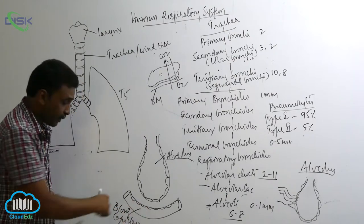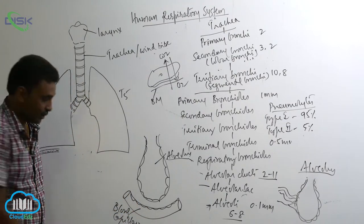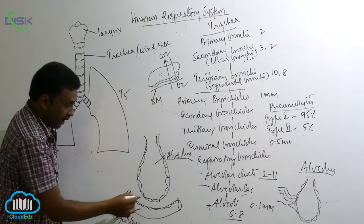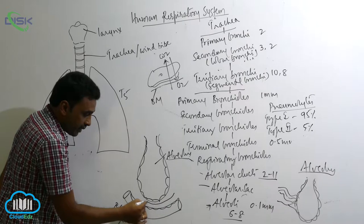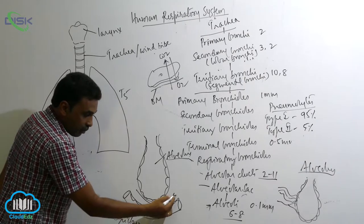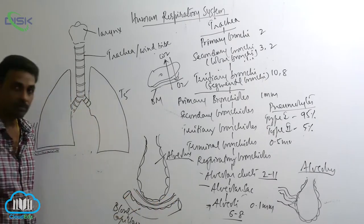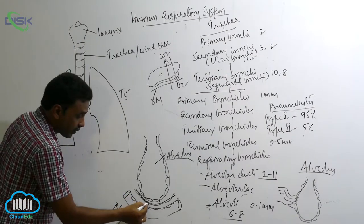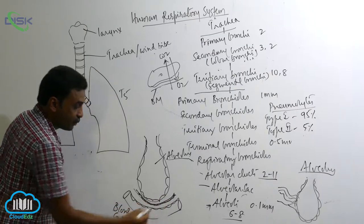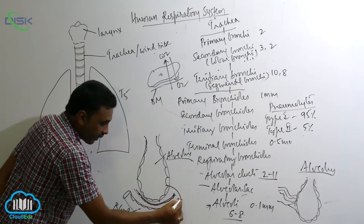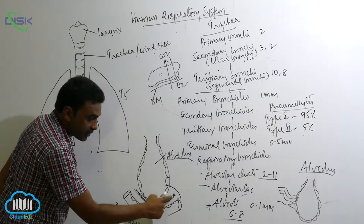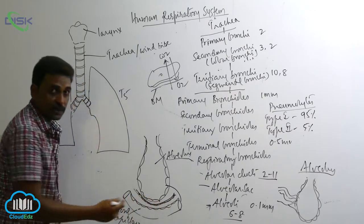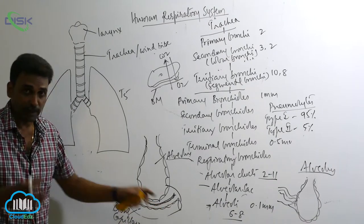This is the capillary, which is also made up of simple squamous epithelium, so there will be a basement membrane for it as well. For the alveolar epithelium there is one basement membrane, and for the capillary endothelium there is also one basement membrane. Both of these basement membranes are fused with each other.